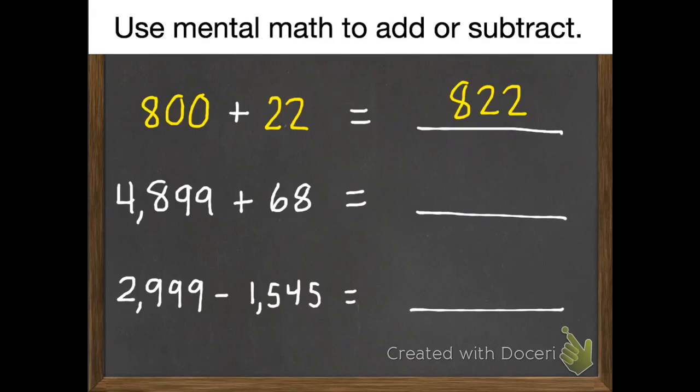For the second problem, I would have added 1 to our first number, subtract it from the other, to get 4,900 plus 67, which is 4,967.